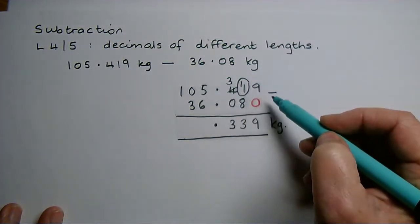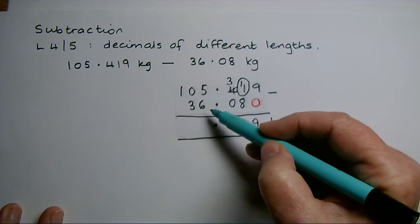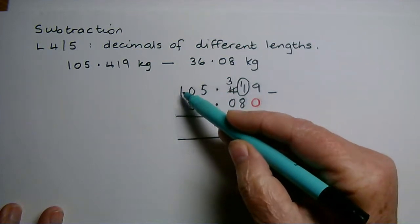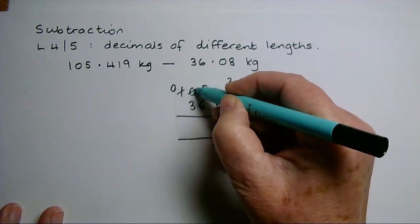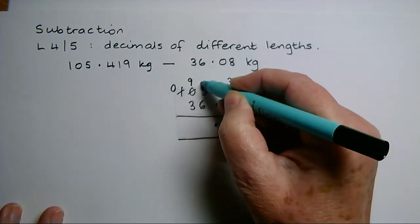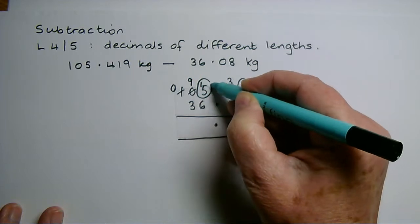In the units, I've got five take away six. I can't do that. I need to convert this hundred. So I'm going to take that hundred and I'm going to turn it into nine tens and ten units.